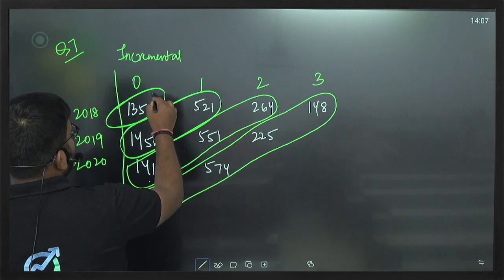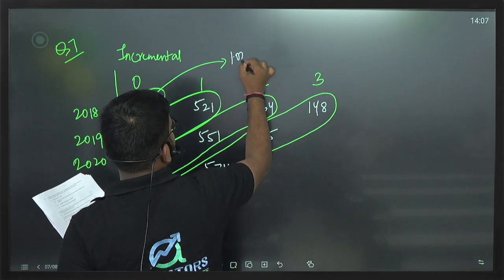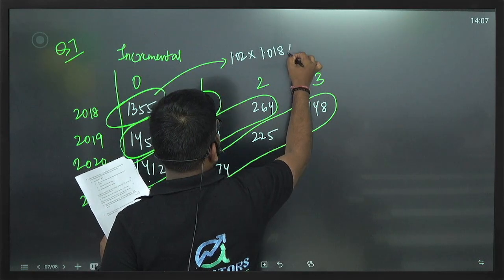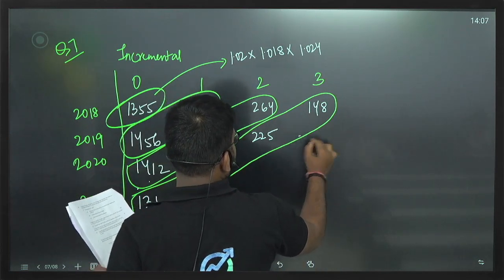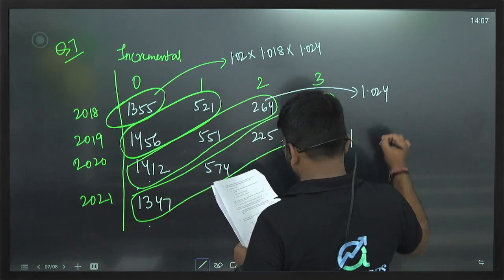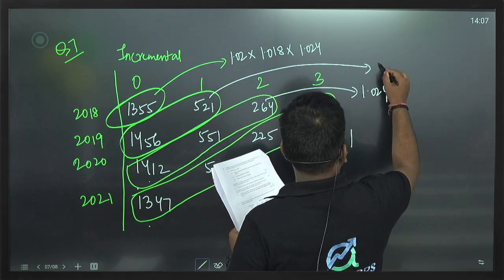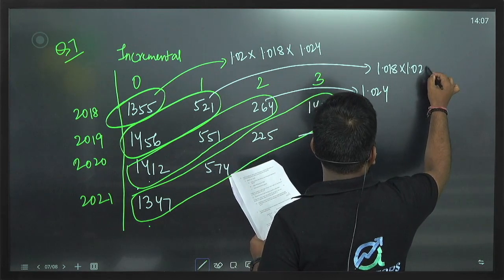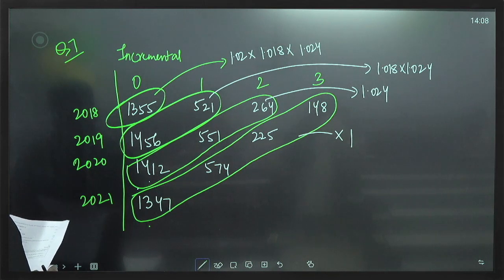The adjustment approach: the 2021 column is multiplied by 1; the 2020 column values are multiplied by 1.024; the 2019 column values are multiplied by 1.018 × 1.024; and the 2018 column values are multiplied by 1.021 × 1.018 × 1.024. This brings all incremental claims to mid-2021 prices.